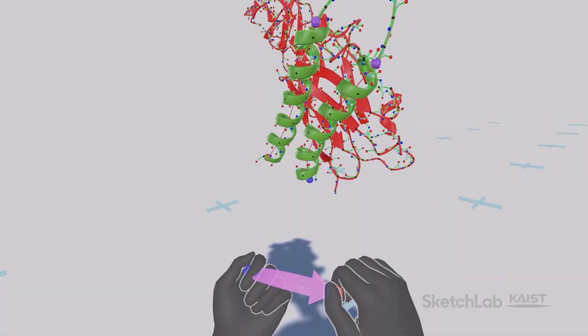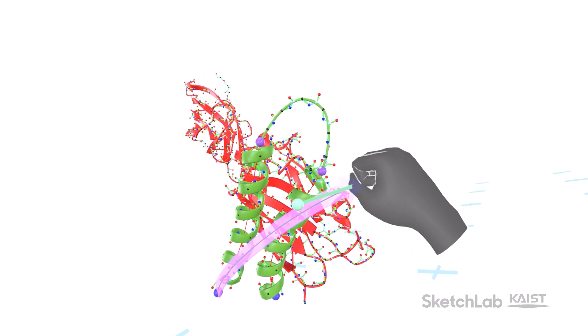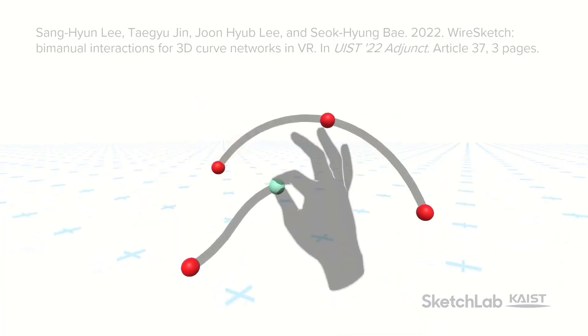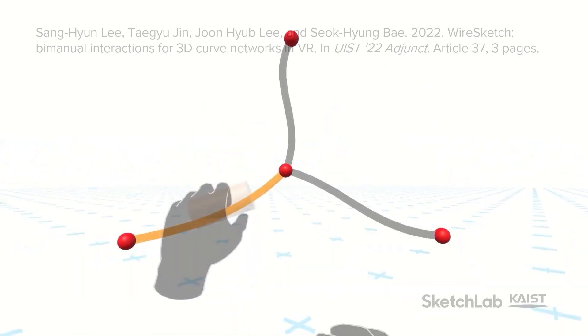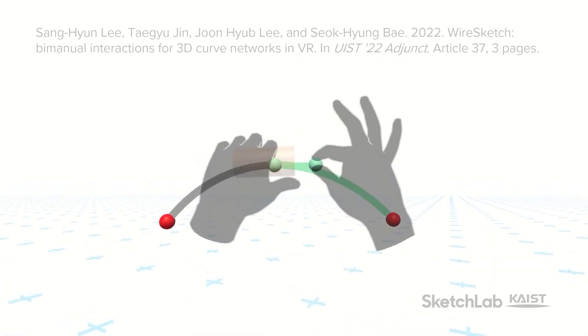We propose a novel VR interaction system that enables quick and easy sketching of new proteins through intuitive bare-hand interactions. To achieve this, we extend WireSketch, a VR interaction system for offering 3D curved networks during the early stages of product design.